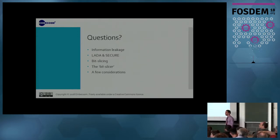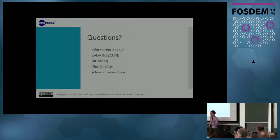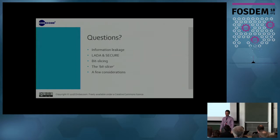A question from the audience: in block ciphers like AES you usually have S-boxes — the operation is like a byte substitution going to a byte. These S-boxes are not linear by design because you don't want linearity. So how would you B-slice this kind of operation? The speaker clarifies: it's asking about the substitution operation in block ciphers like AES — the substitution boxes used to remove linearity.